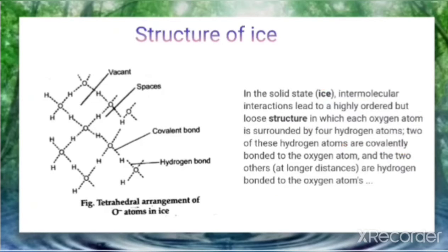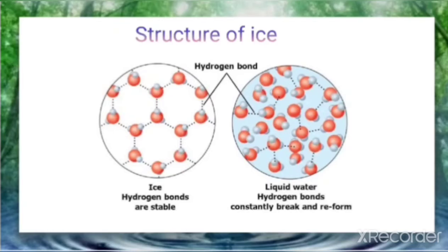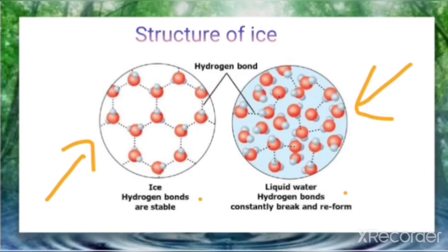When we compare ice with liquid water, the hydrogen bonds are more stable in ice. In liquid water, hydrogen bonds are constantly breaking and reforming, which is why water is liquid while ice is solid.